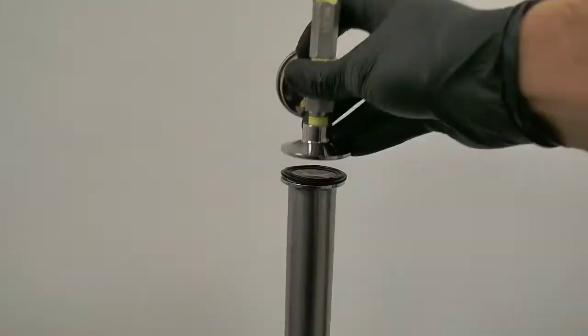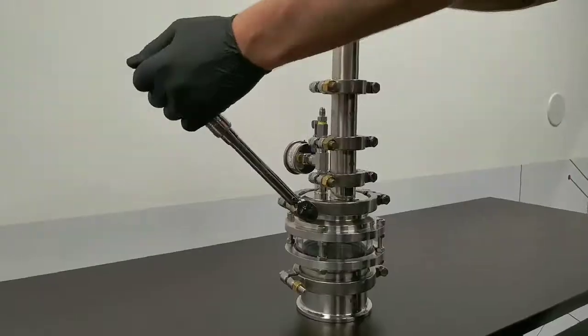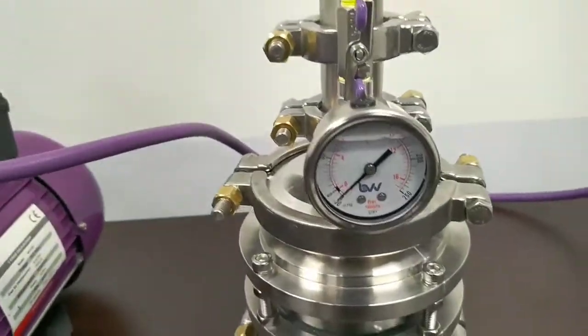Place it atop the filter stack, add the injection manifold, and all your clamps. Torque each one to manufacturer specification and pull the entire system under vacuum.